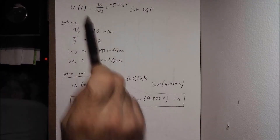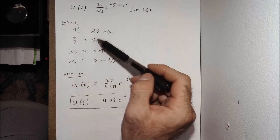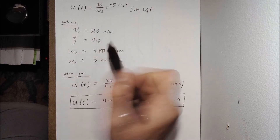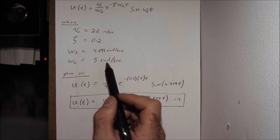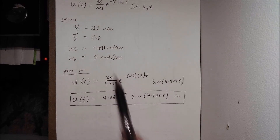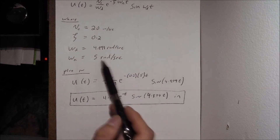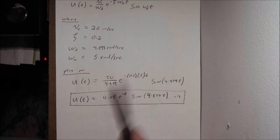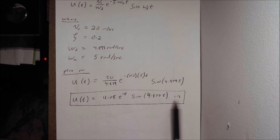We rewrite the equation at the top of the next page and list all known values: v naught equals 20 inches per second, damping factor equals 0.2, omega sub d equals 4.899 radians per second, and omega sub n equals 5 radians per second. Plugging everything in, u of t equals 20 divided by 4.899, times e to the negative 0.2 times 5 times t, times the sine of 4.899t. Reducing and simplifying, we get u of t equal to 4.08 e to the negative t times sine of 4.899t, in inches.